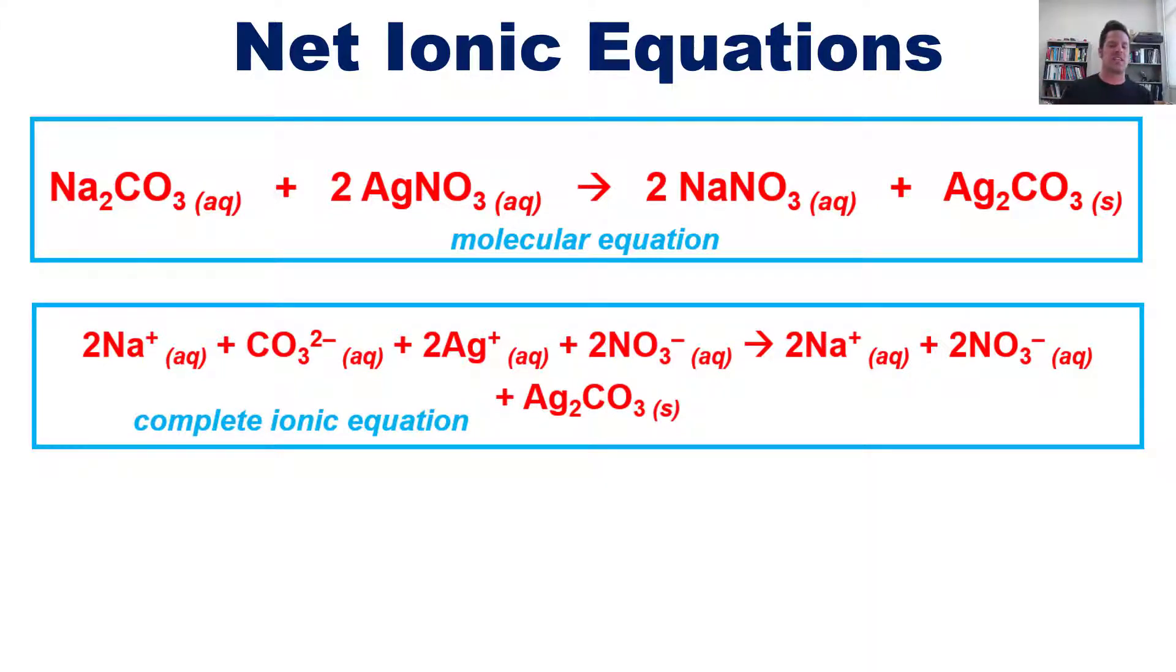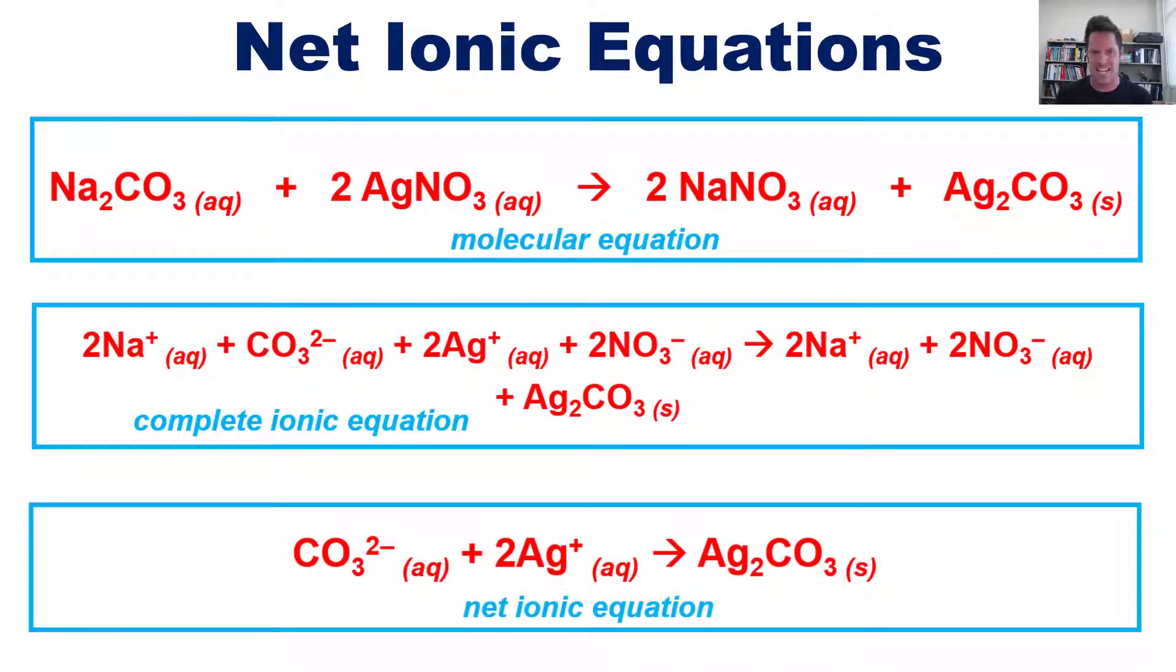And when we cancel out everything that's the same on both sides of the equation and write what's left over, it is in this form called the net ionic equation. So, this is the process we go through in order to derive a net ionic equation.